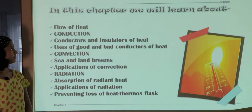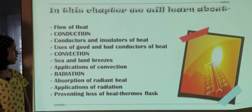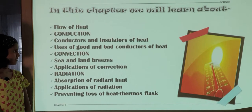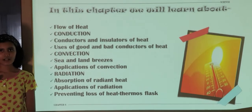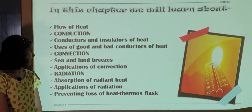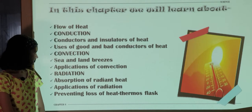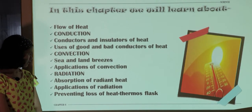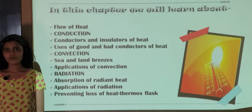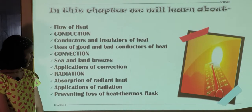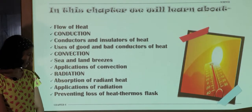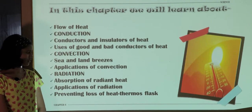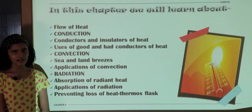In this chapter we learn about Flow of Heat, Conduction, Conductors and Insulators of Heat, Uses of Good and Bad Conductors of Heat, Convection, Sea and Land Breeze, Application of Convection, Radiation, Absorption of Radiant Heat, Application of Radiation, and Preventing Loss of Heat from the thermos flask.